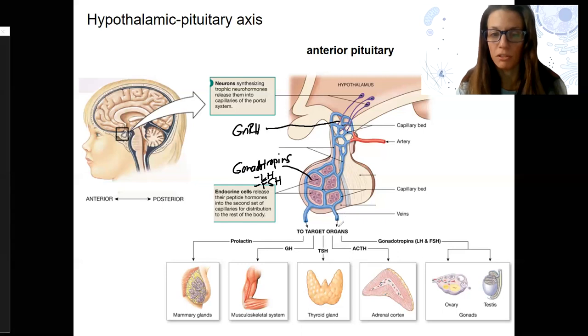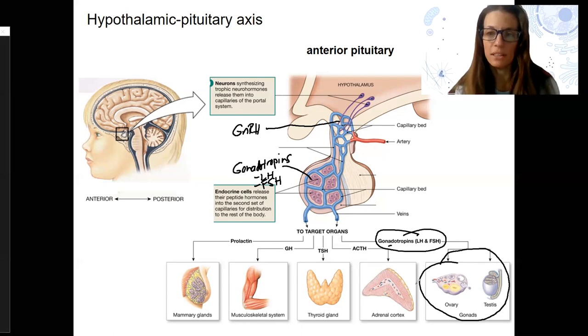They're being produced in these cells, but they're going off into the bloodstream, these gonadotropins, to target the gonads. Gonadotropins target the gonads, the ovaries and testes. Both gonadotropins target both male and female gonads. So this is our HPG axis.